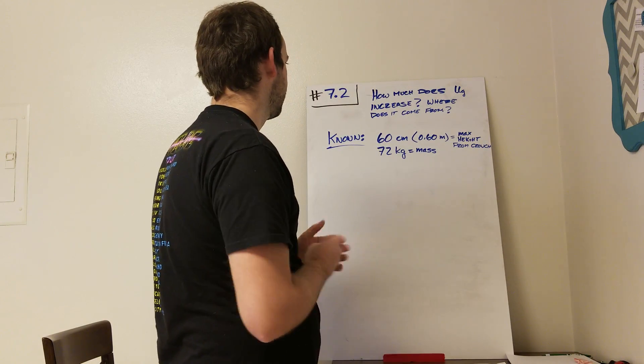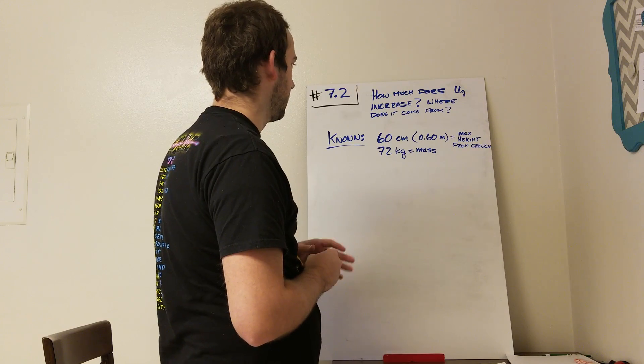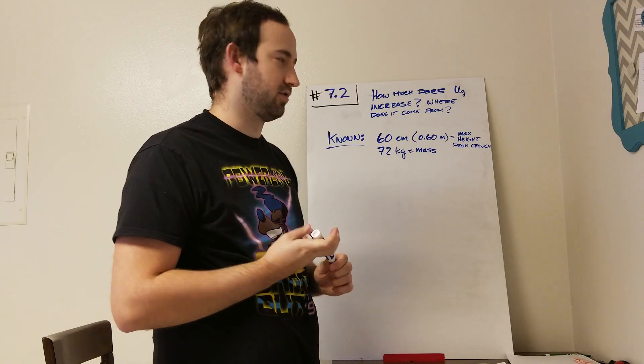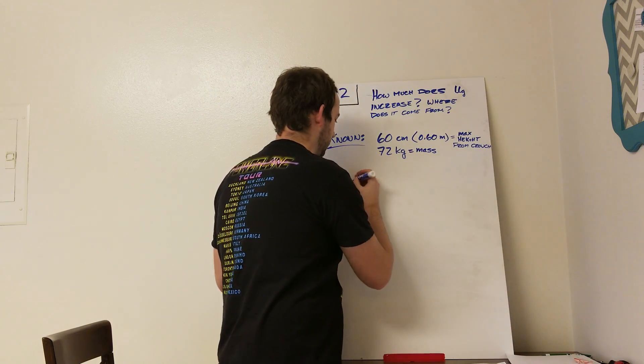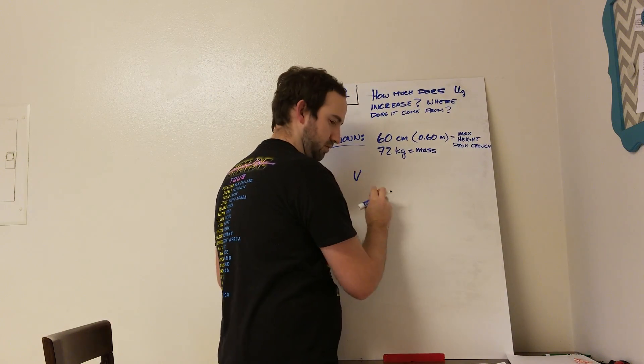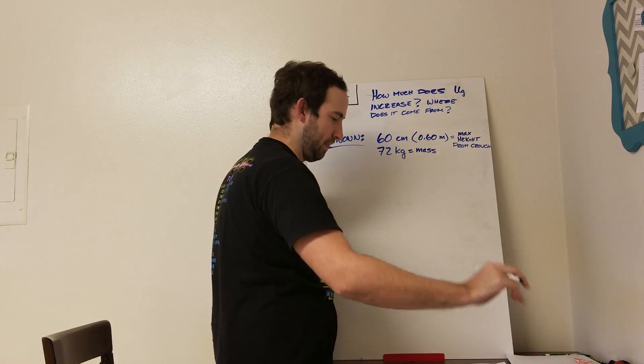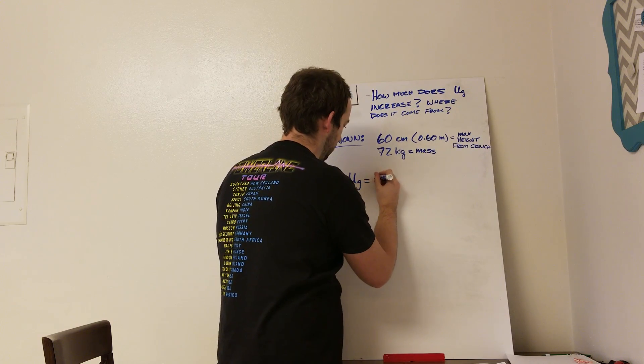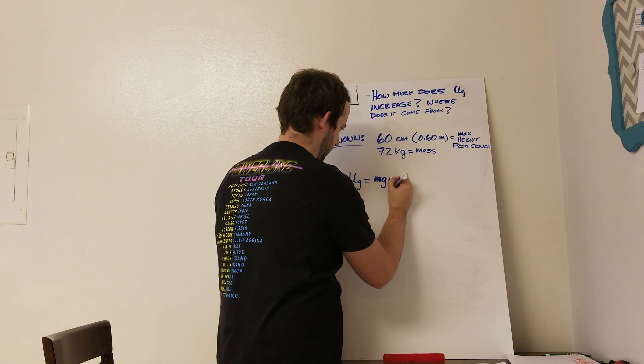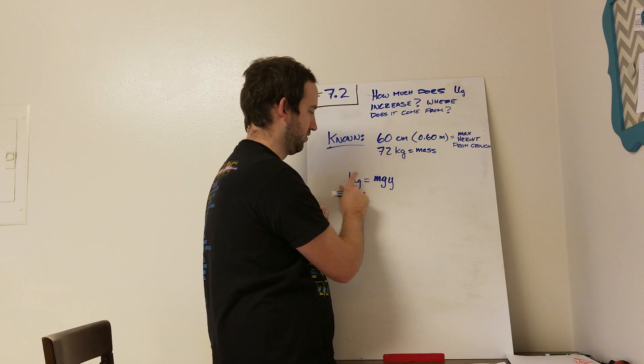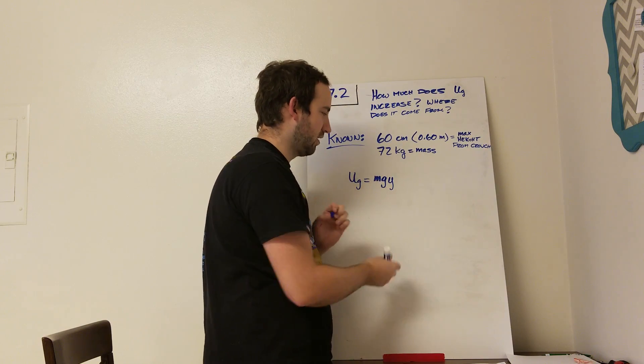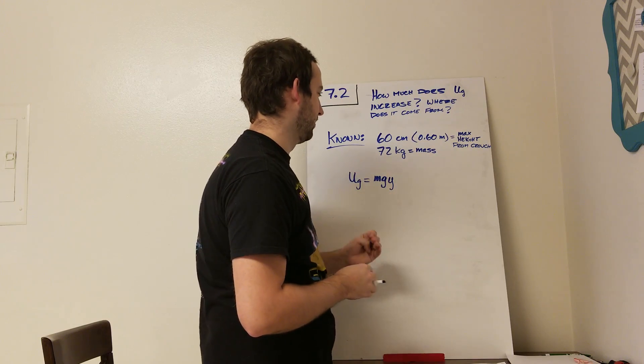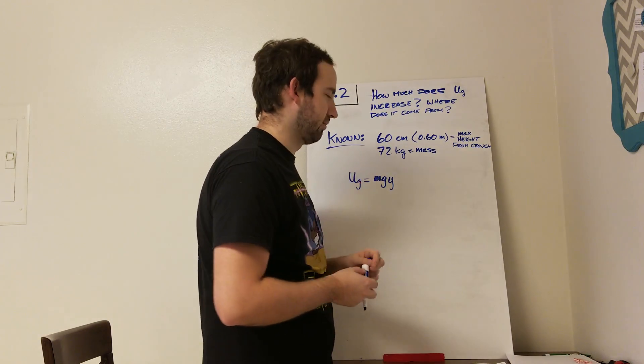So to get started with that first part, we need to solve for the gravitational potential energy, which we know is Ug equals, so the gravitational potential energy equals mgy, y being the height, g being the acceleration due to gravity, and m being the mass.